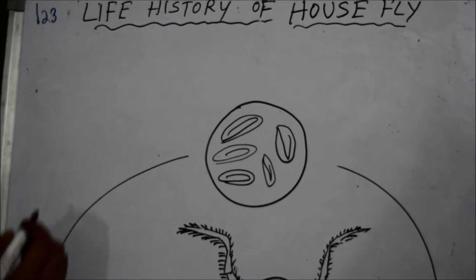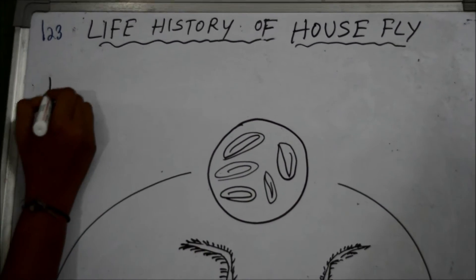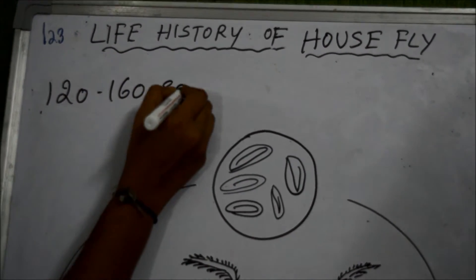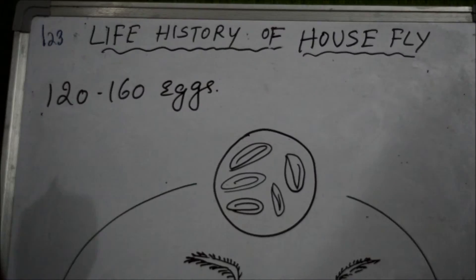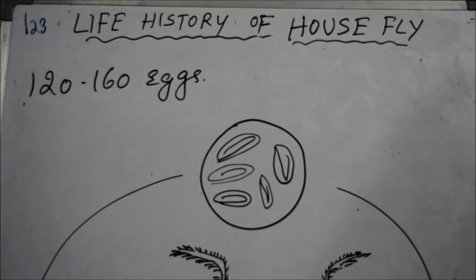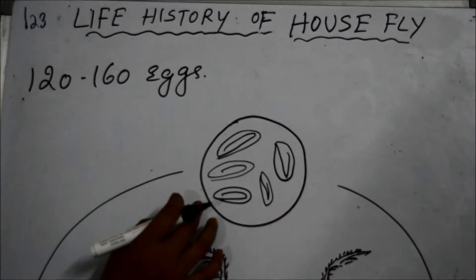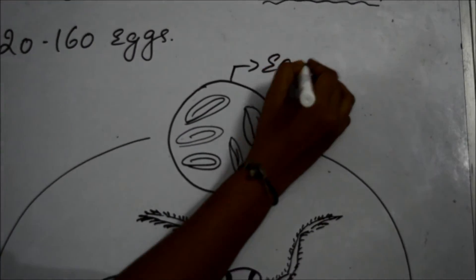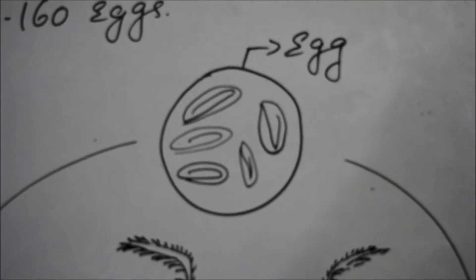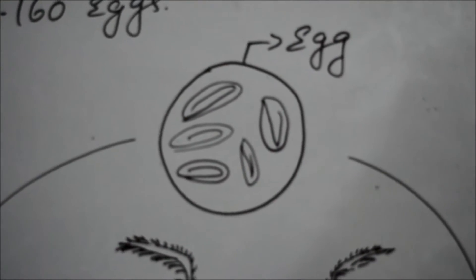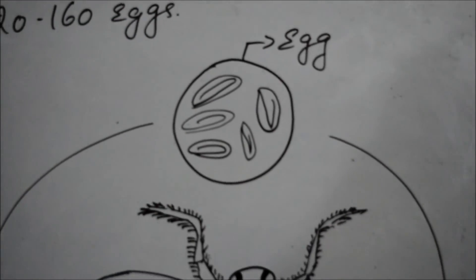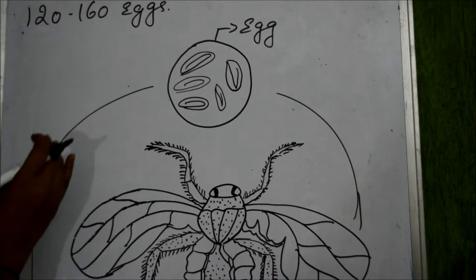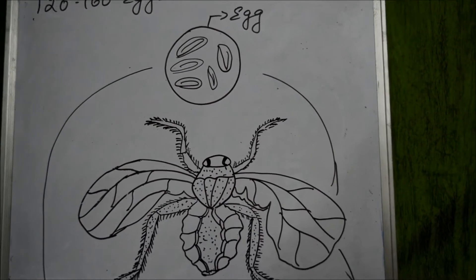A female housefly at a time lays 120 to 160 eggs. These eggs are laid in garbage — for example, in a garbage dump, dung heap, or in decaying animals and vegetable matter.